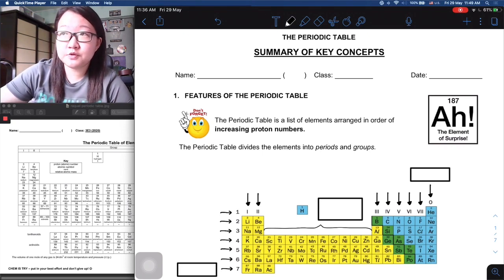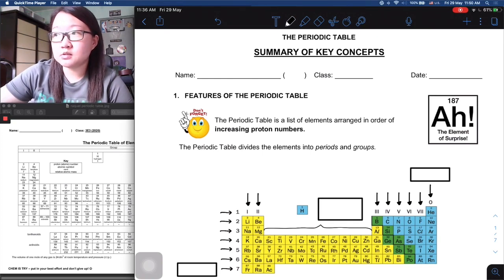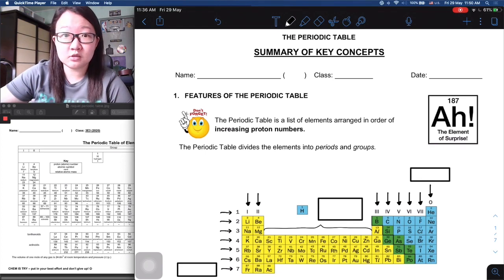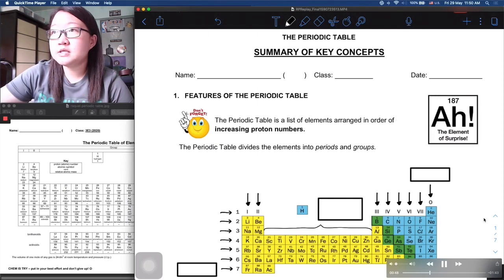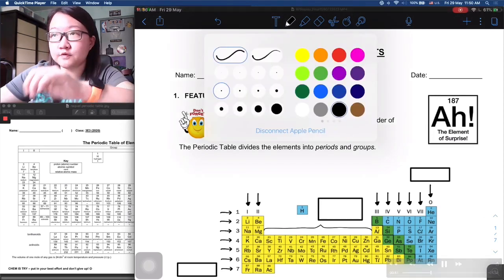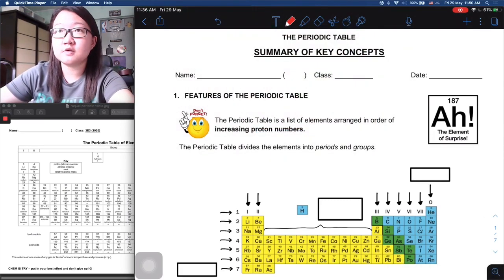In this chapter there are a few parts to it. Firstly, an overview of what the periodic table is about, and then there will be three different groups that we will look at in greater detail: group 1 metals, group 7 halogens, as well as group 0 noble gases. Let's start with the overview first, which is the features of the periodic table.